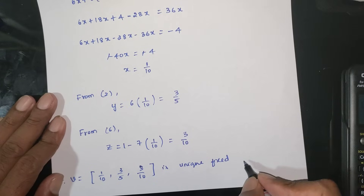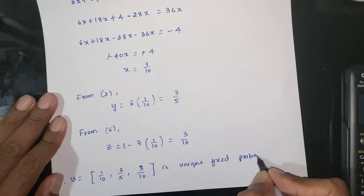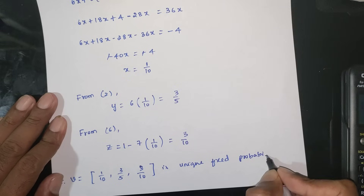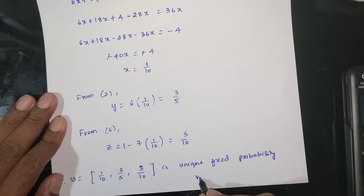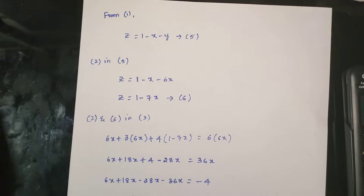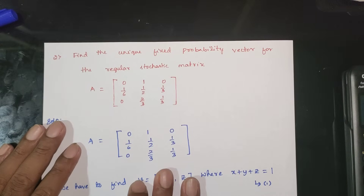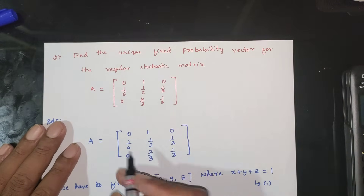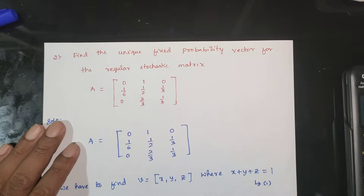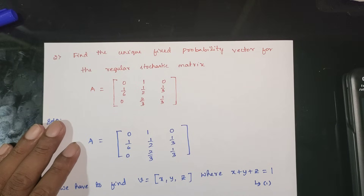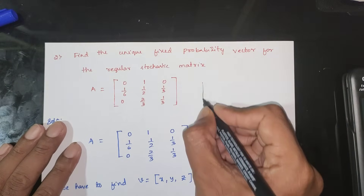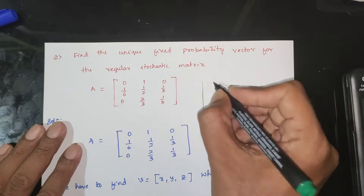This is the unique fixed probability vector. The answer is confirmed.